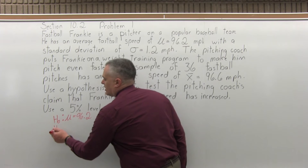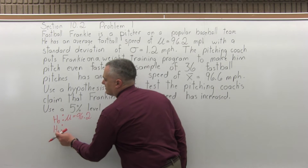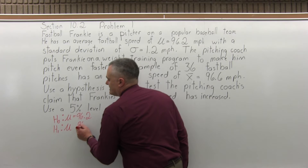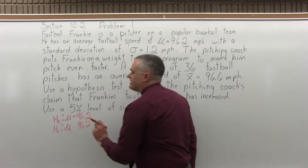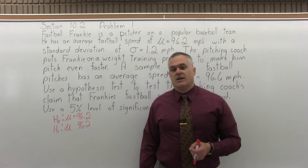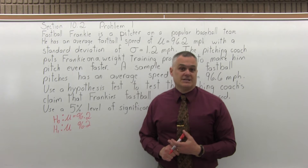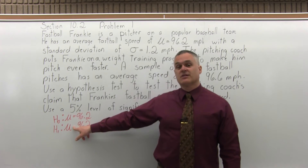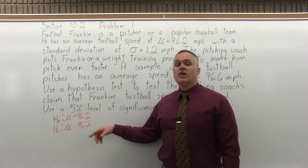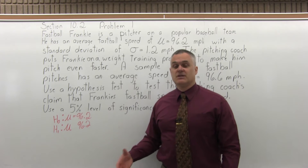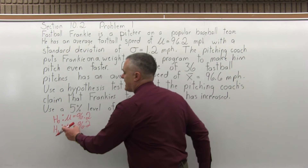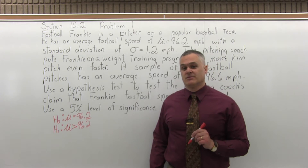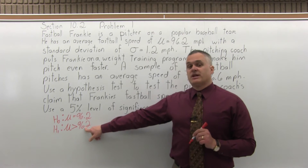Step two: state the alternate hypothesis. H sub 1 — some books use H sub A, but H sub 1 is a little bit more common. Mu, same mu, it's going to have 96.2 again, but now there's going to be an inequality symbol. You have to ask yourself: are you looking for greater than or less than? Occasionally it's not equal to, for a two-tailed test. In this case, we're testing the claim that the average speed of his fastball is even more than it used to be — that he can pitch even faster now, so his average is greater than it used to be.